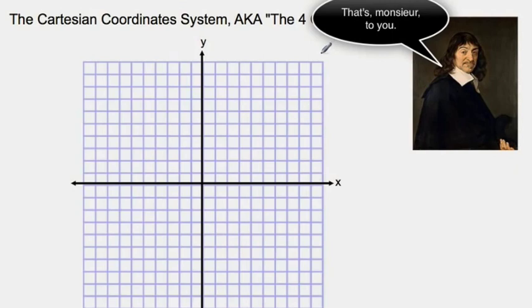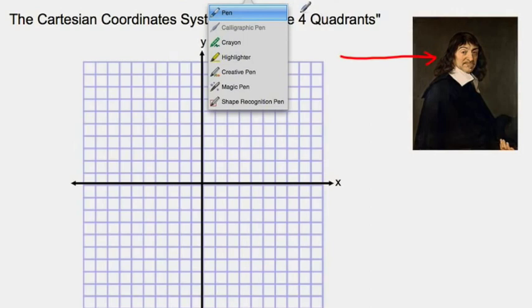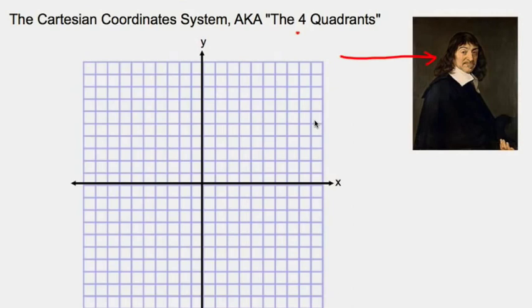Now, Mr. Descartes was a Frenchman alive in the 15th, 16th century. And one day he had nothing better to do than to look at a fly on the wall. And so he decided to himself, how can I describe this fly, the direction and coordinates of this fly to my friends? You really wish that it was a more mathier story than that, but no, it's really not. It's kind of boring that way.